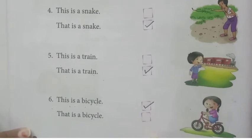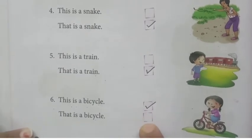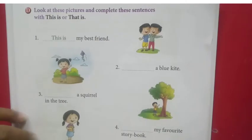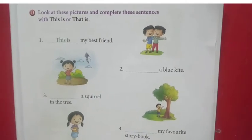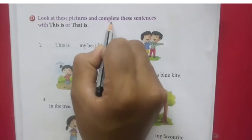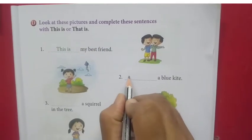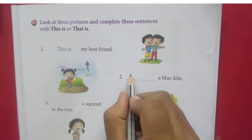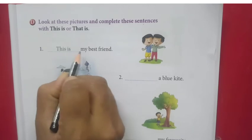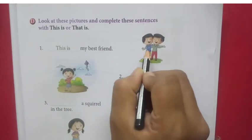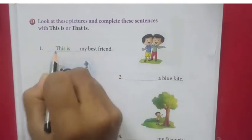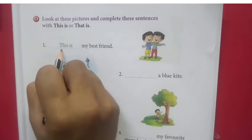This way you have to write this exercise in your Grammar Land textbook. Now, another exercise on page number 39 — exercise D. Look at these pictures and complete these sentences with 'this is' or 'that is.' Here, what we have to do? You have to just write the correct answer — 'this is' or 'that is.' Number 1 — 'this is my best friend' — it is nearby, so 'this is.' One is already done for you.